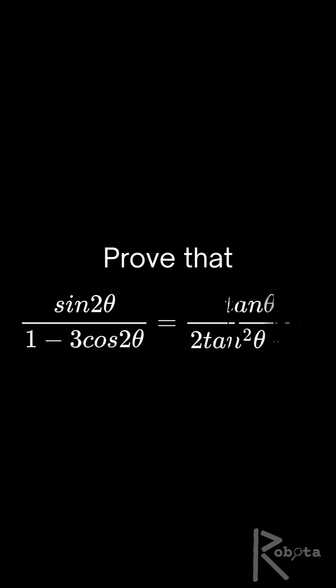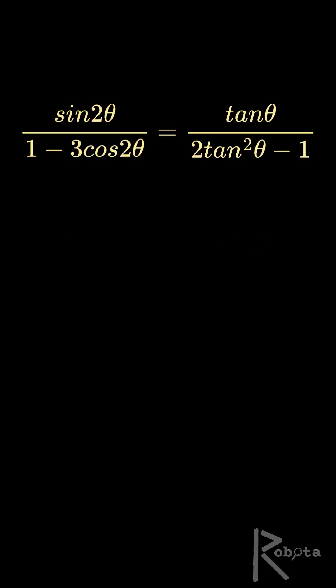Can you prove this tricky trig identity? Hey everyone, today we're proving this wild identity. Sine 2 theta over 1 minus 3 cos 2 theta equals tan theta over 2 tan squared theta minus 1. Let's crack it.